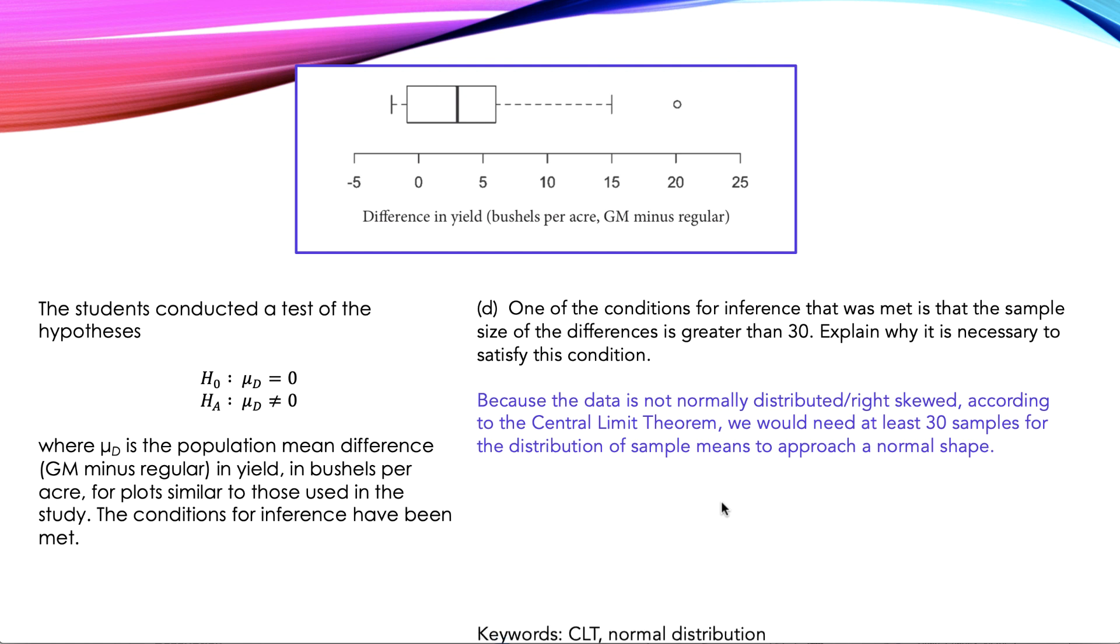I basically copied the central limit theorem here. So how would I want students to respond? I would want them to mention something about CLT, and I'd also want them to mention the fact that we had to use it because the data is not normally distributed. So you would need both of those to earn full credit here.